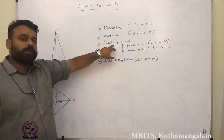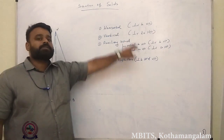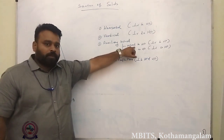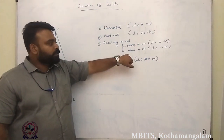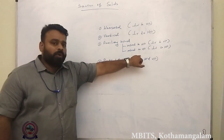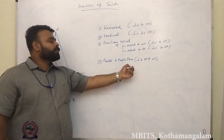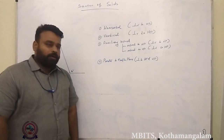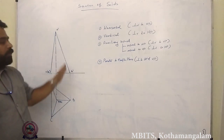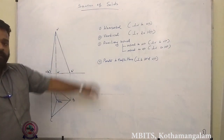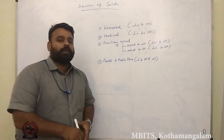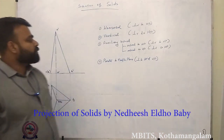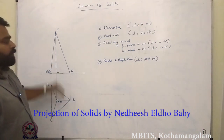The third type of sectional plane is an auxiliary inclined section plane — the section plane will be inclined to HP. A second case is a section plane that is inclined to VP. The fourth type is a section plane that is parallel to the profile plane, or a section plane that is perpendicular to both HP and VP. In that case we will have to take the side view of the solid to get the actual idea of the section. We can represent these four types of section plane in the given sample figure.